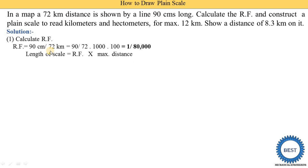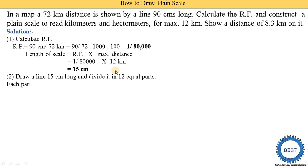The length of scale equals RF multiplied by maximum distance. RF = 1/80,000 and maximum distance = 12 kilometers. We convert 12 kilometers to centimeters: 12 × 1000 = 12,000 meters, and 12,000 × 100 = 1,200,000 centimeters. Dividing by 80,000 gives a length of scale of 15 centimeters.